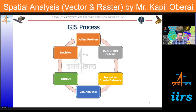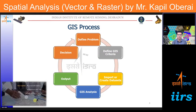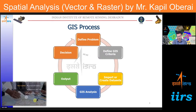The GIS process flow has various stages. We start with defining the problem — for example, setting up a new location or facility. First we need to define the criteria, such as proximity to communication routes and access to clients. Based on those criteria, the next step is to import or create datasets to support the problem. This is where most of the time goes in the GIS process flow, because GIS is an information system that needs the necessary datasets to process information.